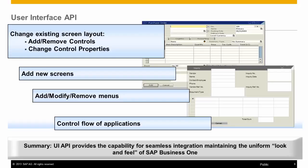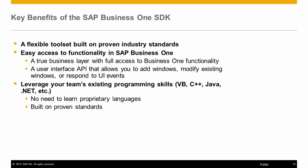We can also create our own forms that have the same look and feel as an SAP Business One form, allowing for a seamless user experience. Key benefits of the SAP Business One SDK are a flexible toolset built on proven industry standards, easy access to functionality through a true business layer, a user interface API that allows us to add windows, modify existing windows, and respond to UI events. You can also leverage your team's existing programming skills such as VB, C++, and Java, with no need to learn any proprietary languages.